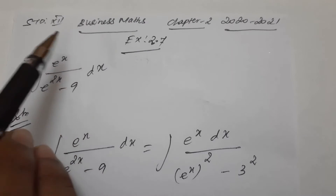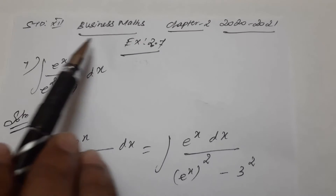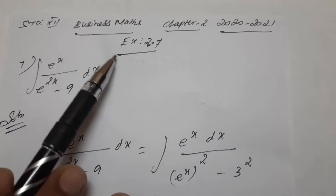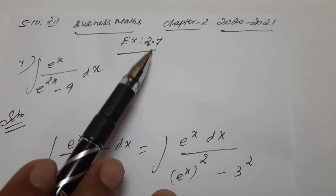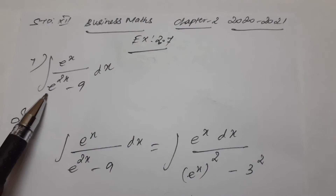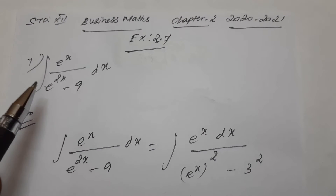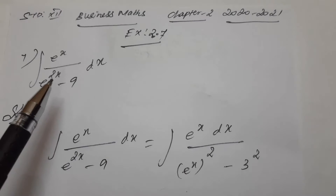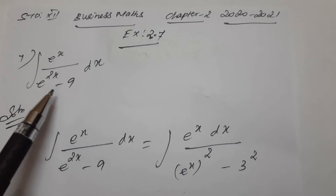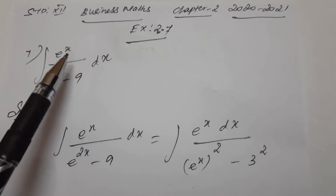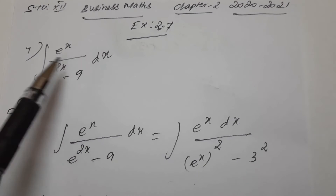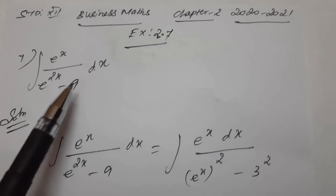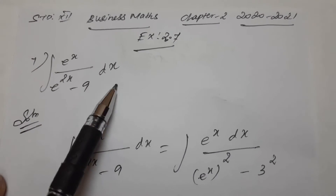Hi students, 12th standard Business Maths, Chapter 2, Exercise 2.7, 7th sum. Last class we completed the 6th sum. Now moving on to sum 7: integration of e power x divided by e power 2x minus 9, dx.